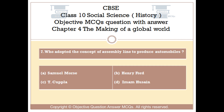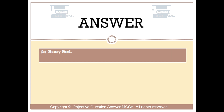Question number 7. Who adopted the concept of assembly line to produce automobiles? Option A: Samuel Morse. Option B: Henry Ford. Option C: T. Cupla. Option D: Imam Hussein. The right answer is Option B: Henry Ford.